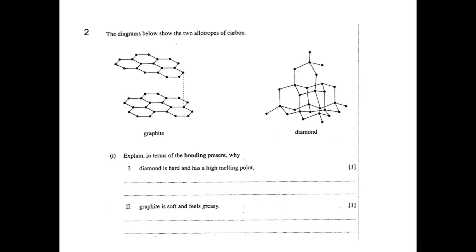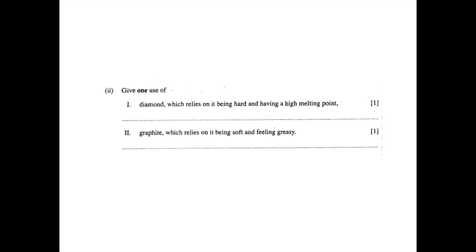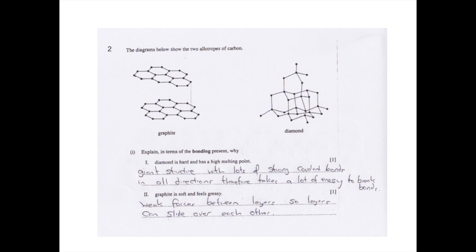Question two comes in two parts. The first part asks why diamond is hard and has a high melting point, and why graphite is soft and feels greasy. For the first part, you need to say that diamond has a giant structure with lots of strong covalent bonds in all directions, and therefore it takes a lot of energy to break the bonds. When answering why graphite is soft and feels greasy, you need to state that it has weak forces between the layers and the layers are therefore able to slide over each other.